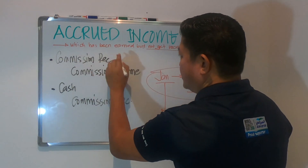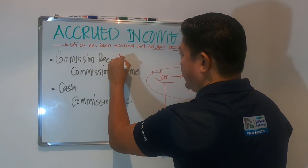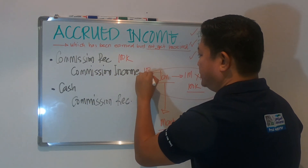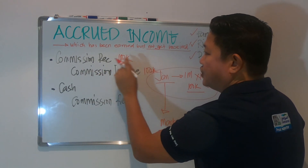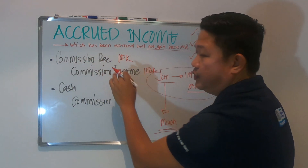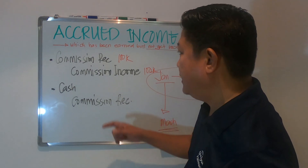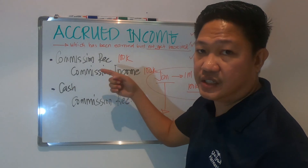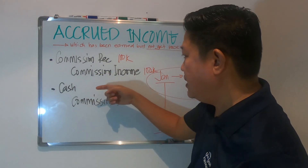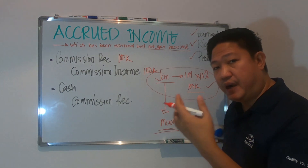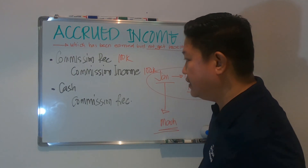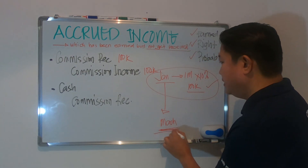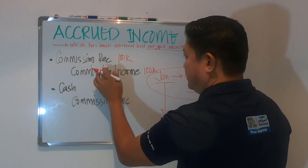This commission or accrued income should be recognized for the month of January. So you have to record commission receivable of 100,000 and commission income of 100,000. Commission receivable will now be part of your current assets in the balance sheet, and commission income will be part of your profit and loss.